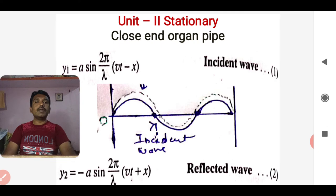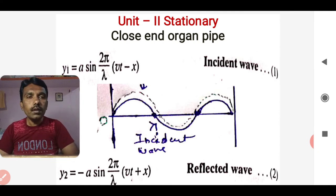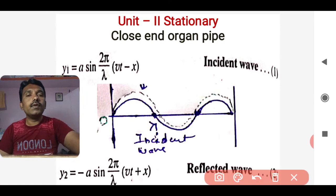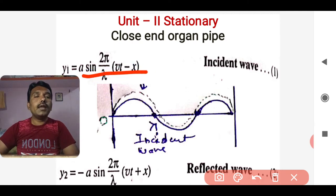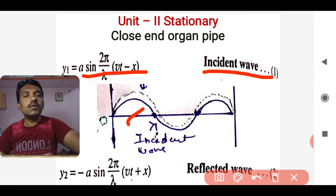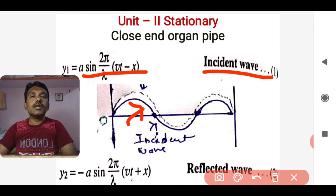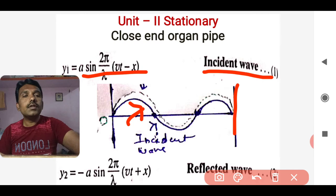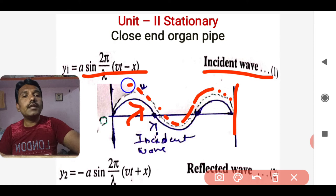As far as the incident wave is concerned, here is the incident wave. If you look at y1, it is equal to a sine of (2π/λ)(vt − x). This is what the incident wave is. As shown in this diagram, this one is your incident wave. As far as this closed-end organ pipe is concerned, the other end is going to be closed.